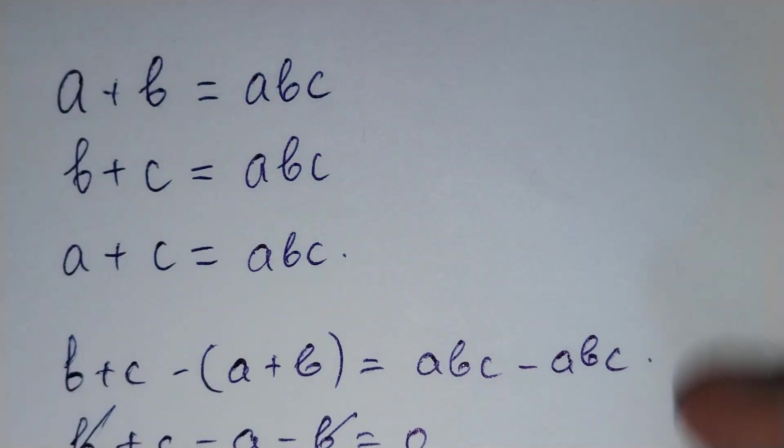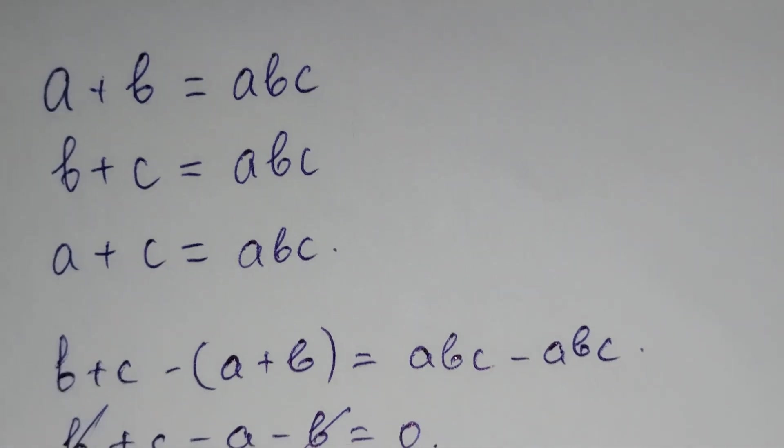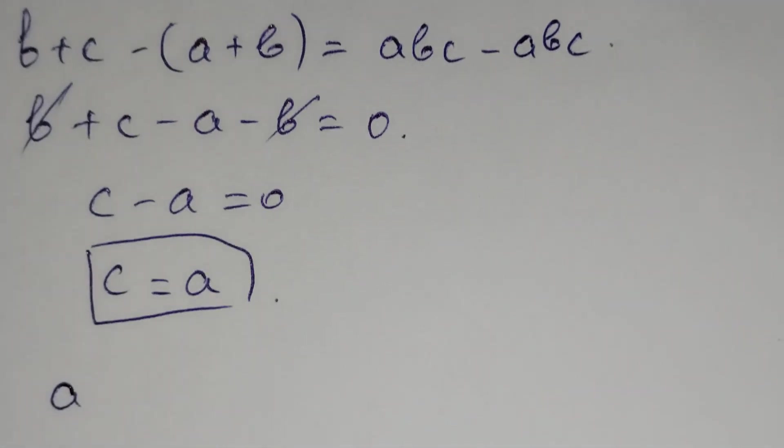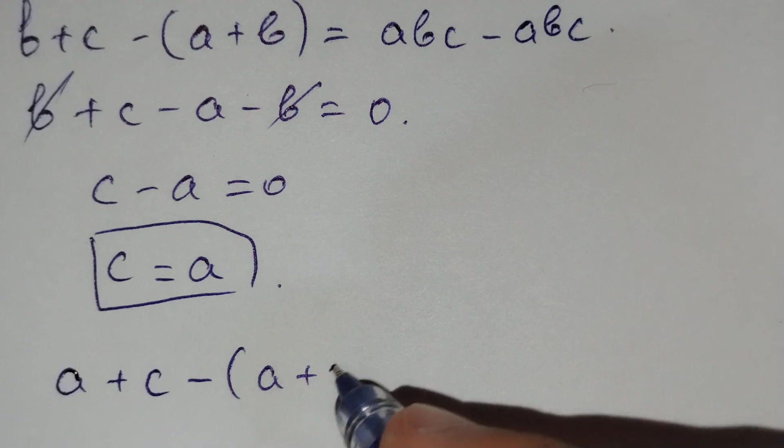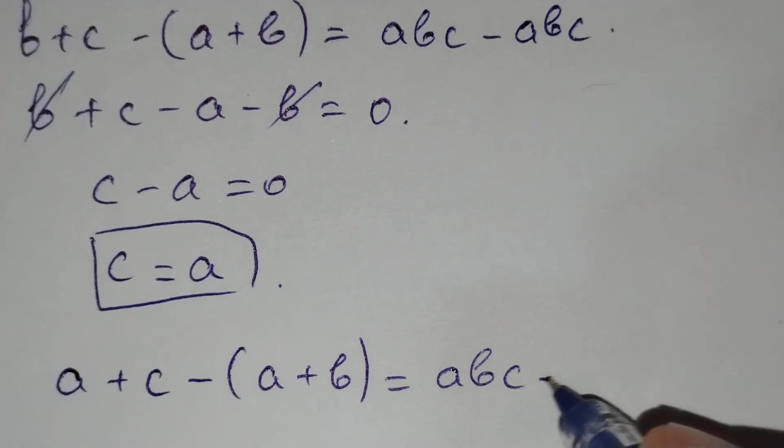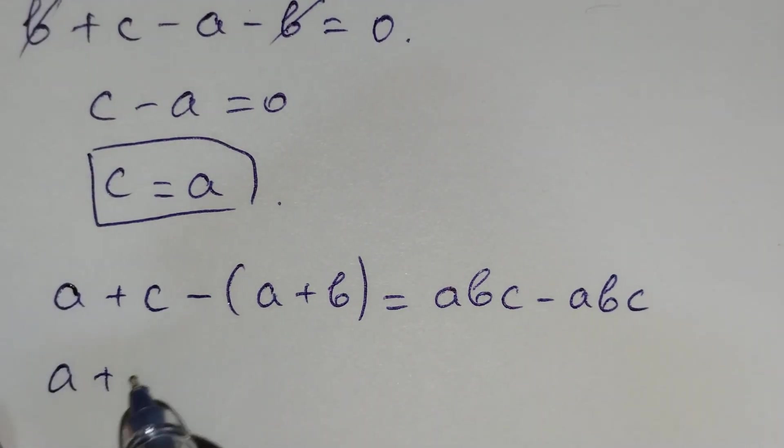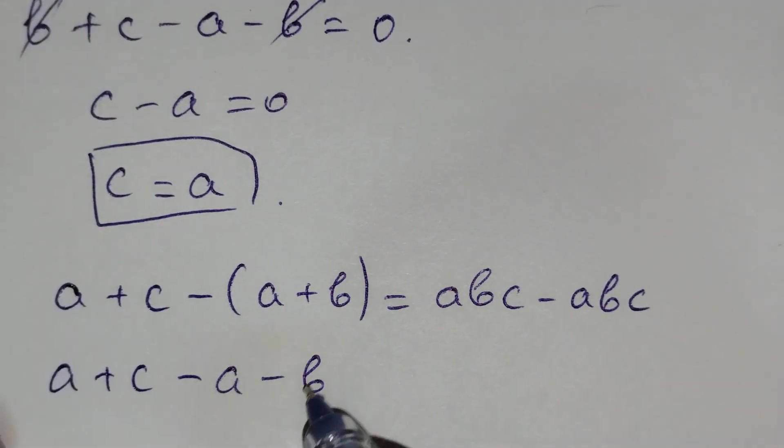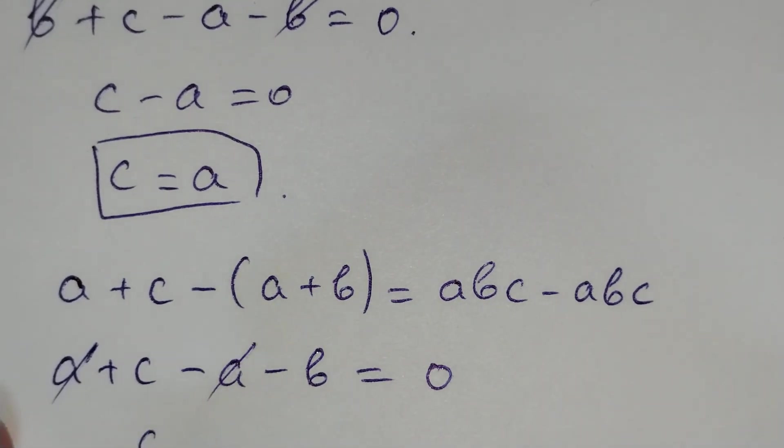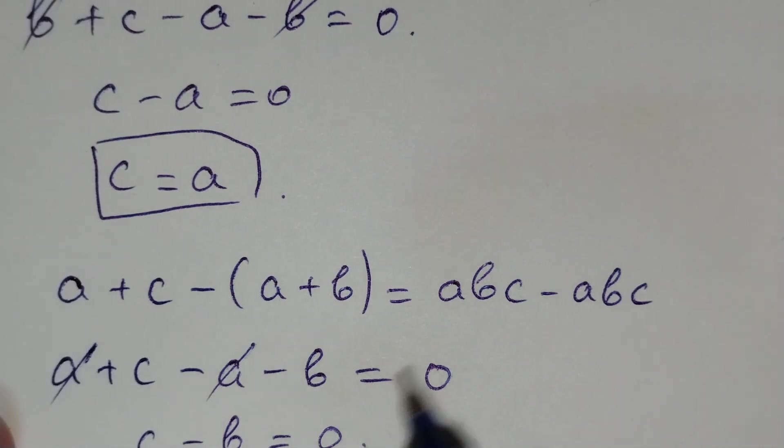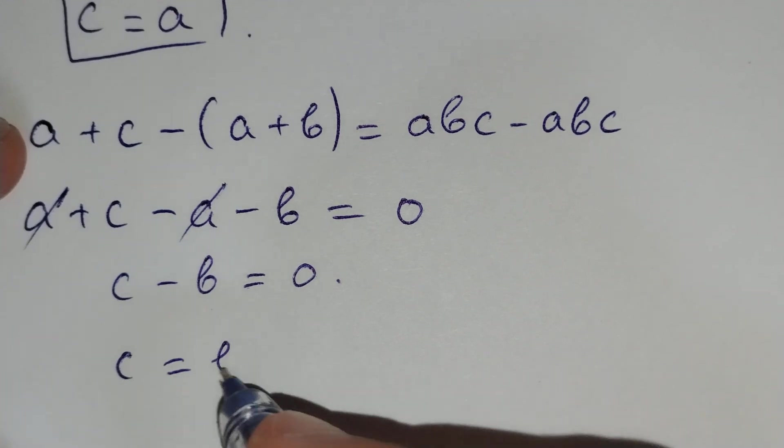And if we subtract the third equation from the first one, a plus c minus a plus b equals abc minus a times b times c, and a plus c minus a minus b equals zero, so c equals b.